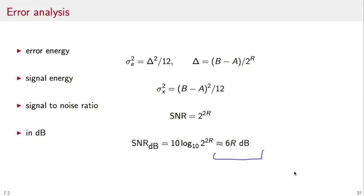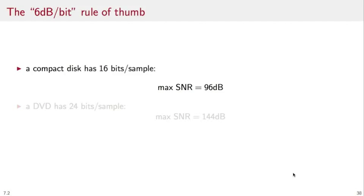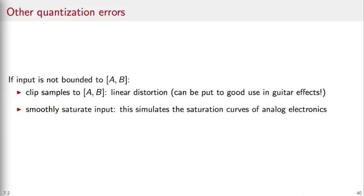In other words, every bit we add to the internal representation of a quantized signal adds 6 dB of signal-to-noise ratio. So for instance, a compact disc has 16 bits per sample, so the maximal signal-to-noise ratio that you can achieve in a CD is 96 dB. A DVD, on the other hand, has 24 bits per sample, so your signal-to-noise ratio grows to 144 dB.